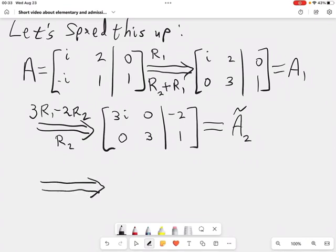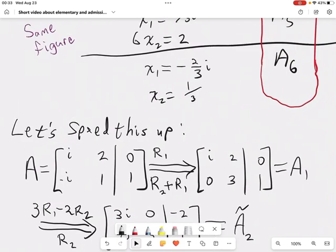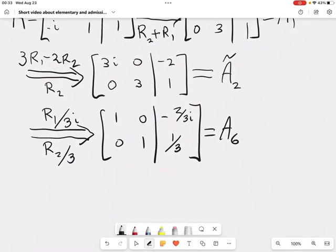Now, from A₂ tilde, we'll produce a new matrix. But this new matrix, I'll get by dividing row 2 by 3, and dividing row 1 by 3i. And that gives us the reduced row echelon form, A₆. So we can immediately write down our solution set.